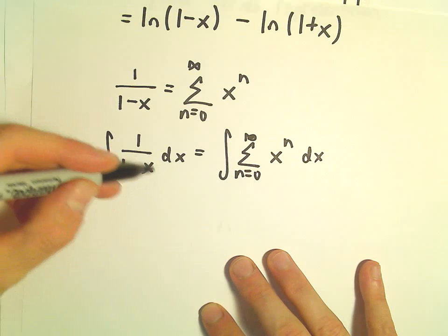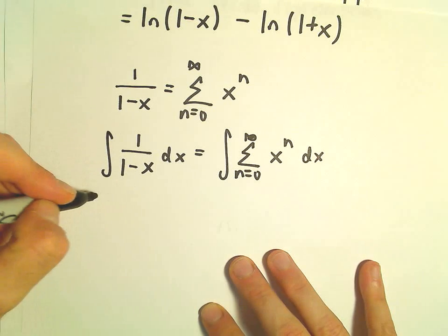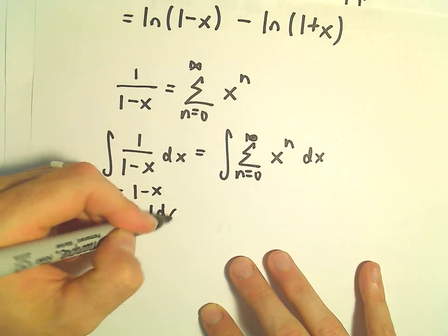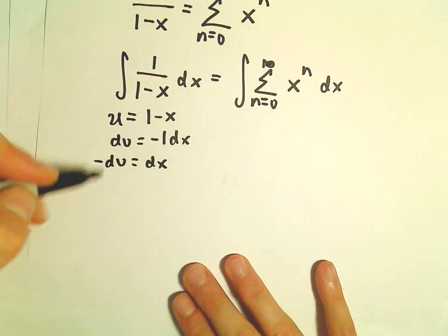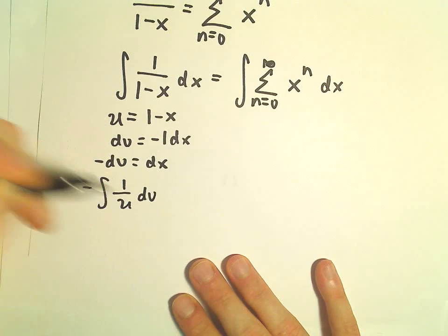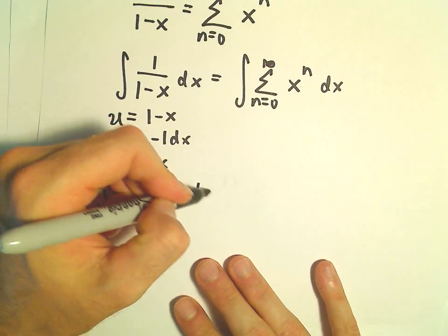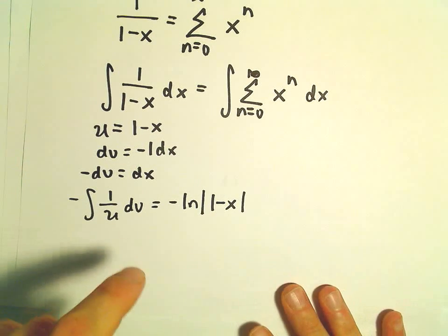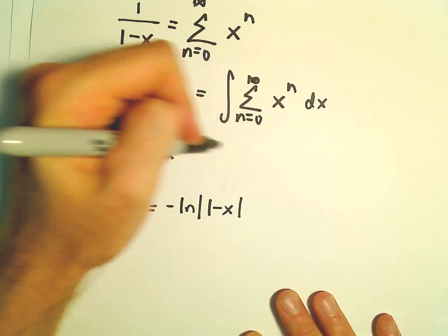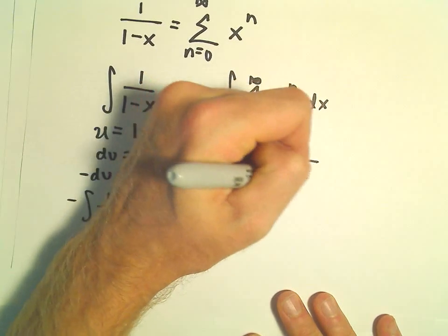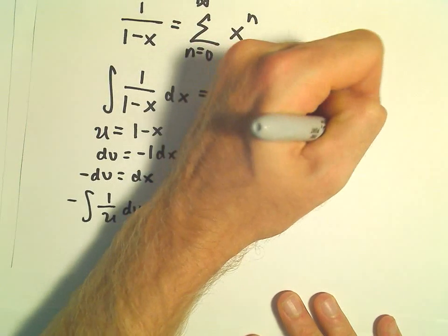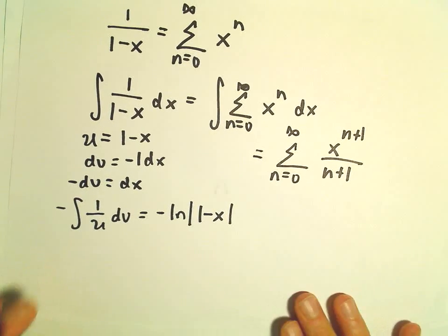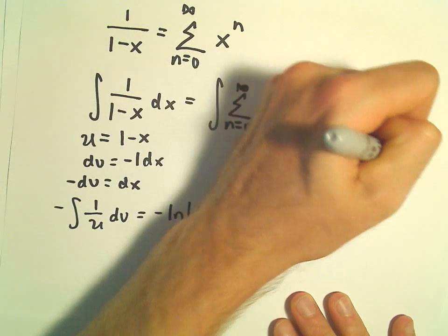If we integrate 1 over (1 minus x) we can just do a u-substitution. We let u equal 1 minus x, so du is going to be negative 1 dx, meaning negative du will equal dx. So really we're integrating negative 1 over u du, and that gives us negative the natural logarithm of u — but u is 1 minus x. When we integrate the right side we get the series n equals 0 to infinity of x to the n plus 1 over n plus 1, and we need to add a plus C.